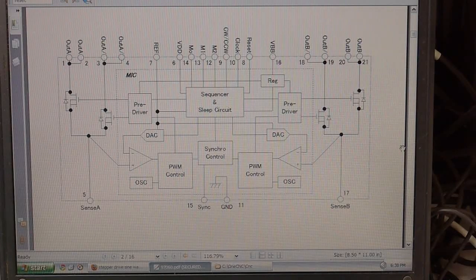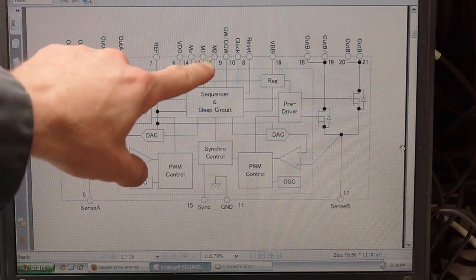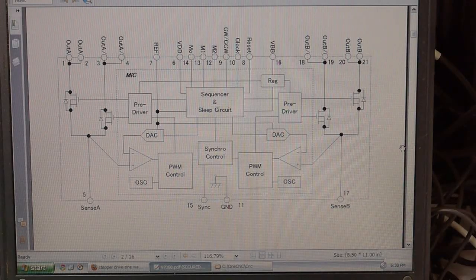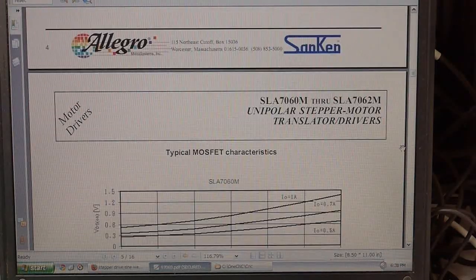The chip has a few other settings up here. M1 and M2 define how many micro steps it's going to make so let me show you what that looks like.